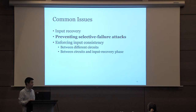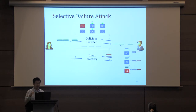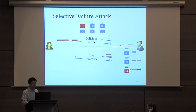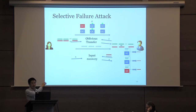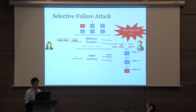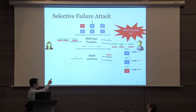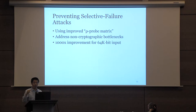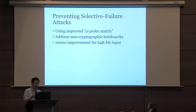The next issue is the selective failure attack. This is a well-known attack where the garbler — Alice — can corrupt one side of the labels during oblivious transfer such that whether Bob can evaluate the circuit depends on his own input. For example, if Y is 1, Bob learns a valid label, but if Y is 0, Bob learns corrupted garbage. The standard way to prevent this is to use a so-called probe matrix. We introduce an improved probe matrix that addresses hidden non-cryptographic overhead largely ignored in previous papers, achieving a 1,000× improvement in running time for 64K-bit input.